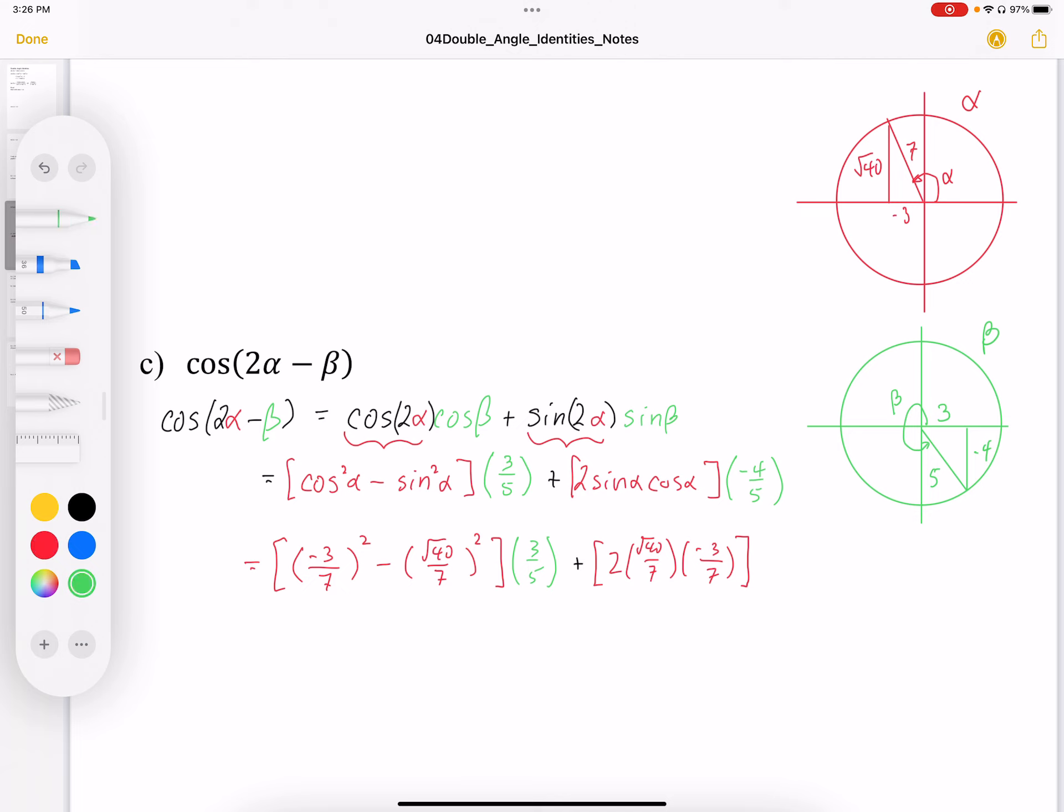And then I've got my negative 4 over 5, which is my sine beta part. So at this point, I've just replaced all the trig expressions with the trig ratios. Now it's just calculating the answer.